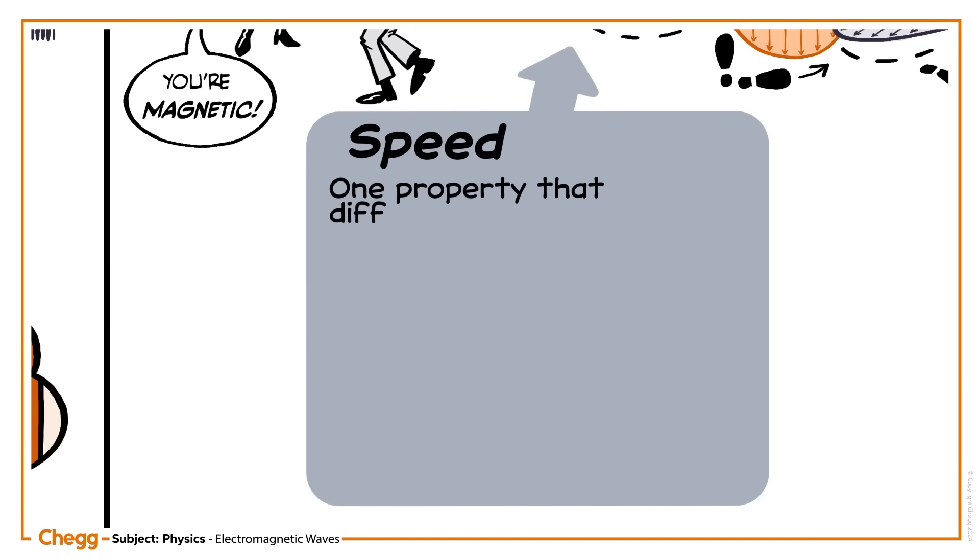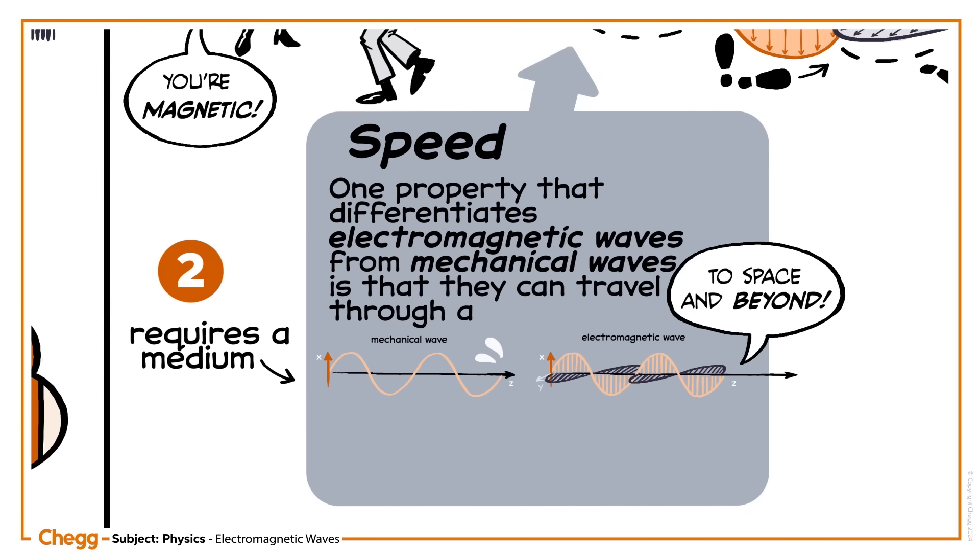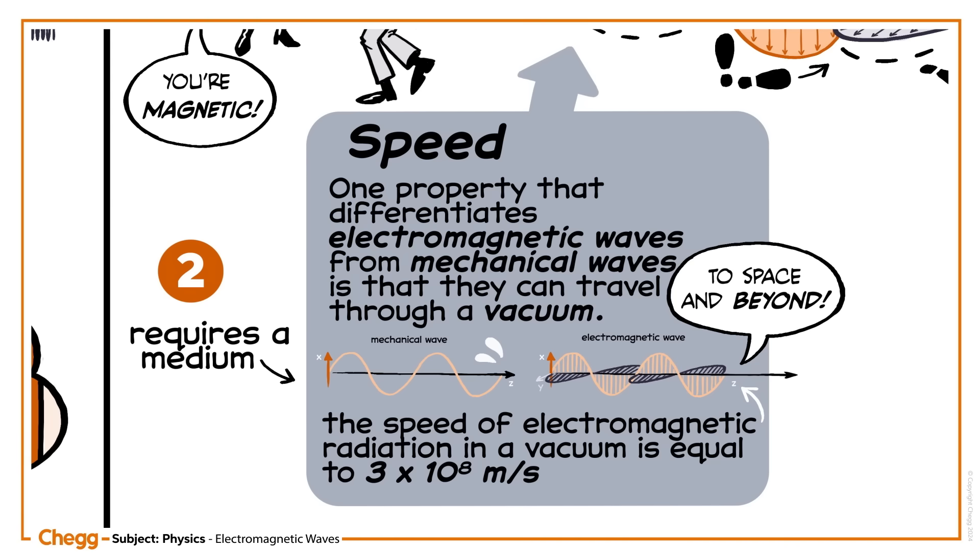One property that differentiates electromagnetic waves from mechanical waves is that they can travel through a vacuum. The speed of an electromagnetic wave in a vacuum is constant at 3 × 10^8 meters per second.